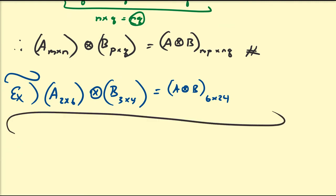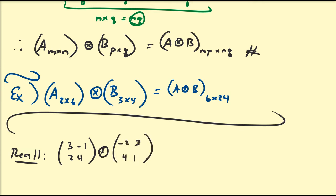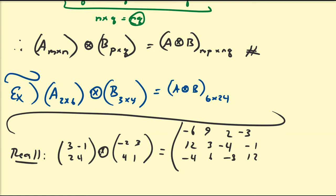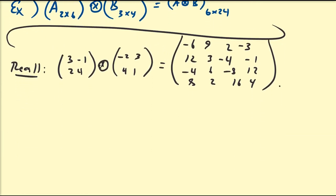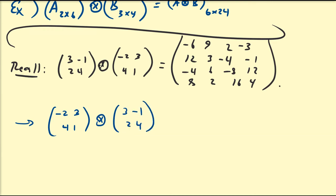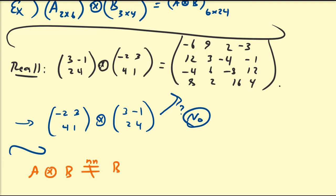Returning to the first example: [3, −1, 2, 4] ⊗ [−2, 3, 4, 1] gave us [−6, 9, 2, −3, 12, 3, −4, −1, −4, 6, −8, 12, 8, 2, 16, 4]. I leave it as an exercise: what is [−2, 3, 4, 1] ⊗ [3, −1, 2, 4]? Do you get the same matrix? The answer is no — Kronecker products do not commute, i.e., A⊗B is not necessarily equal to B⊗A.